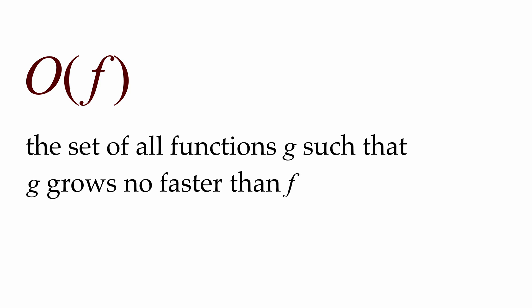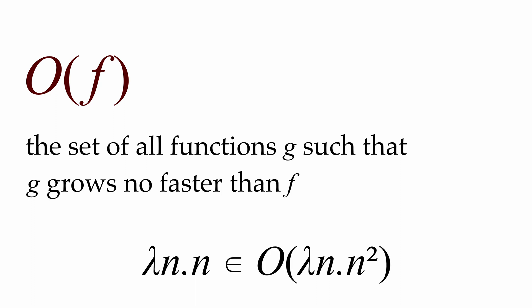Given a function f, big O of f is the set of functions that grow no faster than f. Intuitively speaking, say that f is a function whose input is n and whose output is n squared — here we're using Church's lambda notation for functions. In this case, if we had another function whose input is n and whose output is n, it grows no faster than f, so it's in big O of f. But a function from n to n cubed does grow faster than f, so it's not in big O of f.